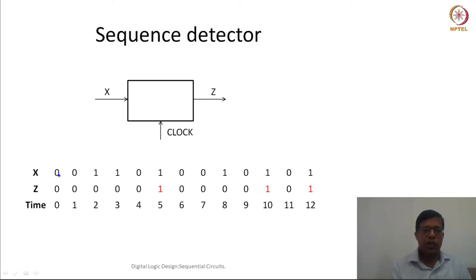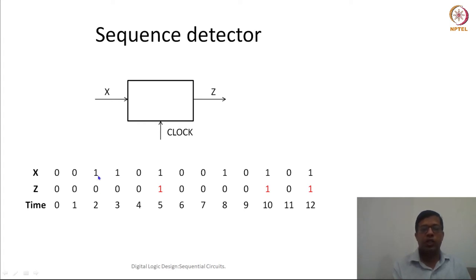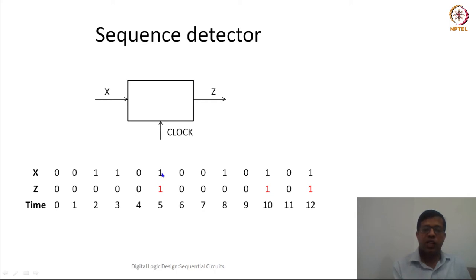Initially we assume z equals 0 at time 0. When x is 0, then 0 again at time 1, the output is 0. The next input is 1, output is still 0. When another 1 comes, the last three bits are 0, 1, 1 — not matching — so output is 0. Then when 0 comes, the last three bits are 1, 1, 0 — still not matching, output is 0. When the next 1 comes, the last three bits are 1, 0, 1 — the pattern has matched — so the output is 1.